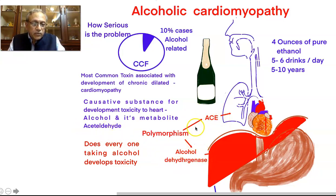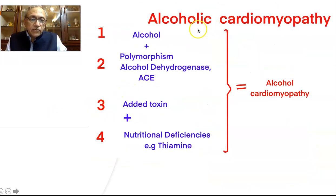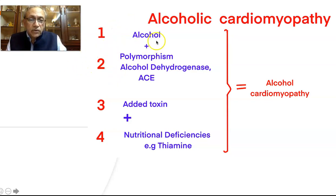Secondly, there is polymorphism of the angiotensin converting enzyme, so that the toxicity gets multiplied because of this polymorphism. What causes alcoholic cardiomyopathy is alcohol itself — that is, the amount of alcohol consumed. If it is more, the chances of getting into this problem are more. Secondly, patients with polymorphism of alcohol dehydrogenase as well as angiotensin converting enzyme are at higher risk.